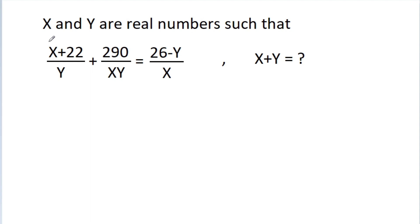In this video, we have given that x and y are real numbers such that x plus 22 by y plus 290 by xy is equal to 26 minus y by x. Then we have to find the value of x plus y.